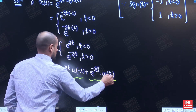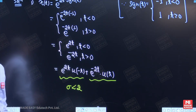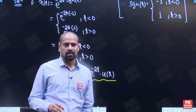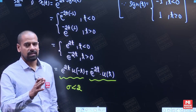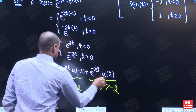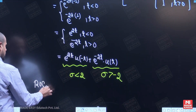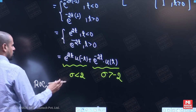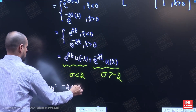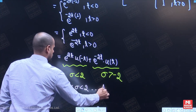In the second part, we have to write down the ROC. Here u(t) is available, meaning this signal tends towards t equal to infinity — it is a right-sided signal, and for a right-sided signal the ROC is also right-sided. So here ROC will be sigma greater than minus 2. The common ROC for these two terms will lie in the range minus 2 to 2. This is the answer for the first part of the question.